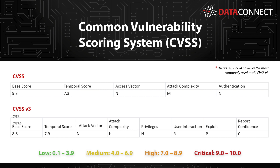Attack complexity is a metric which can either be low or high. High meaning that a successful attack depends on certain conditions that may be beyond an attacker's control. Low means it is relatively straightforward for an attacker to exploit a vulnerability.